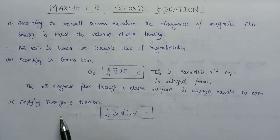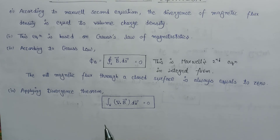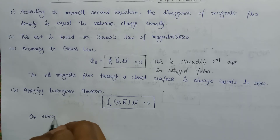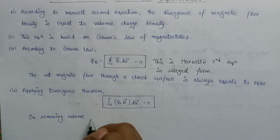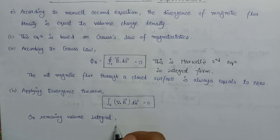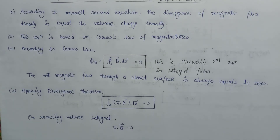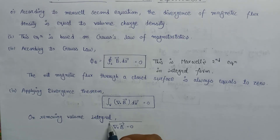For getting Maxwell's second equation in point form or differential form, we remove the volume integral. On doing so, we get del·B = 0, and this expression is nothing but Maxwell's second equation in differential form.